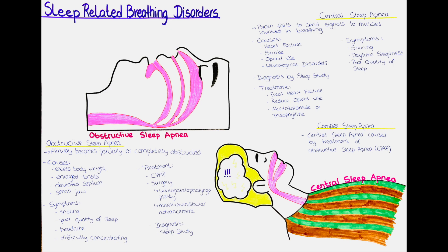Treatment options for central sleep apnea depend on the underlying cause. For people with heart failure, treatment may involve medications to improve heart function and oxygen therapy to improve breathing. For people with opioid-induced central sleep apnea, reducing or stopping opioid use may be recommended. In some cases, medications that stimulate breathing, such as acetazolamide or theophylline, may be prescribed.